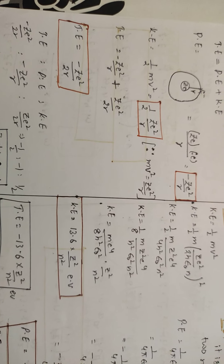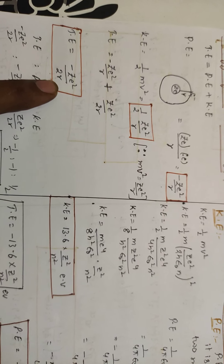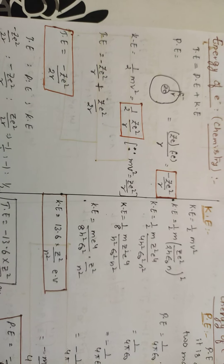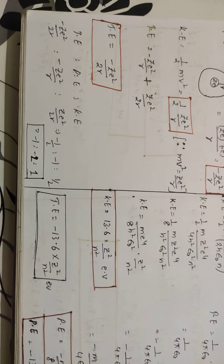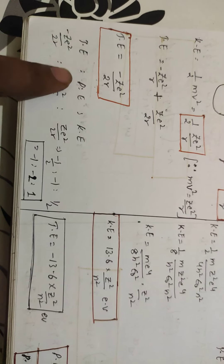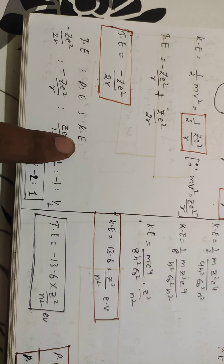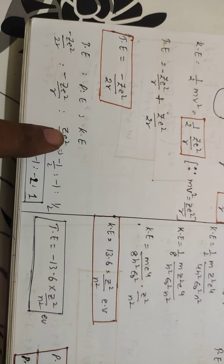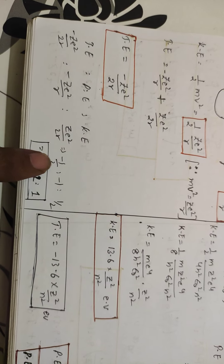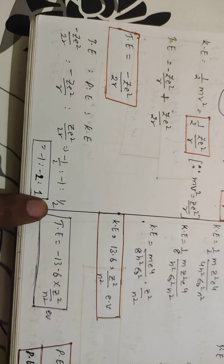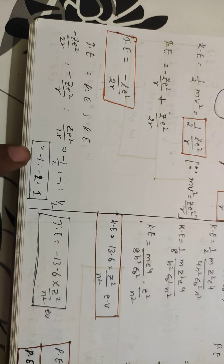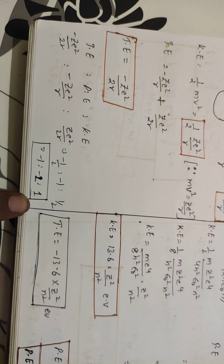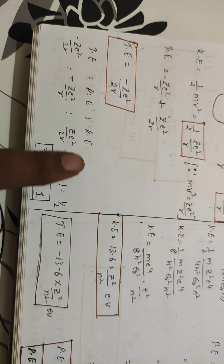This is the condition students. Total energy value is minus ZE²/2R, potential energy value is minus ZE²/R, and kinetic energy value is ZE²/2R. So the ratio between total energy, potential energy, and kinetic energy is minus ZE²/2R : minus ZE²/R : ZE²/2R. If we calculate, we get minus half : minus 1 : half, which gives us the proportionality minus 1 : minus 2 : 1. This is the relation between total energy, potential energy, and kinetic energy.